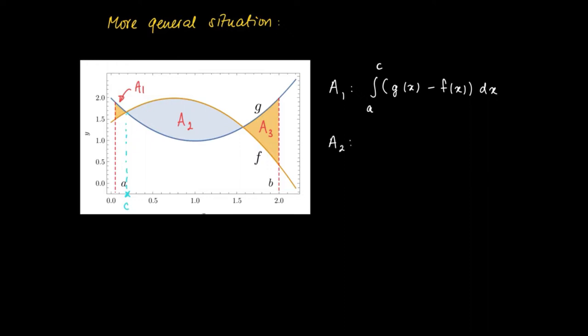Similarly for A2, we see that A2 equals the definite integral from c to d, where d is the right intersection of the graphs of g and f. They intersect for the value x equals d.